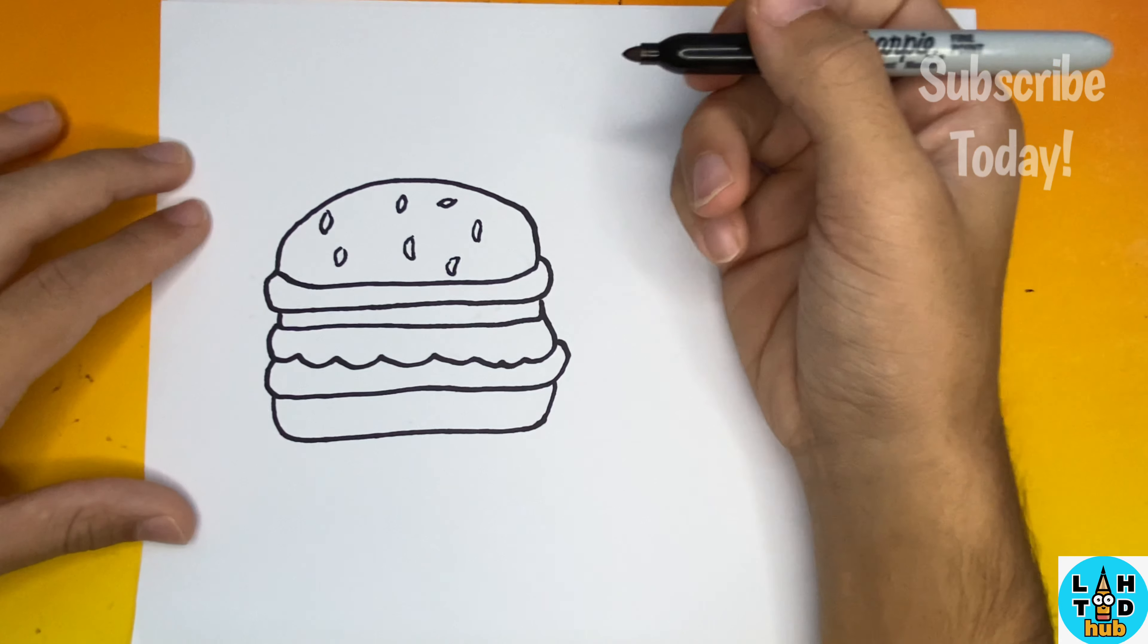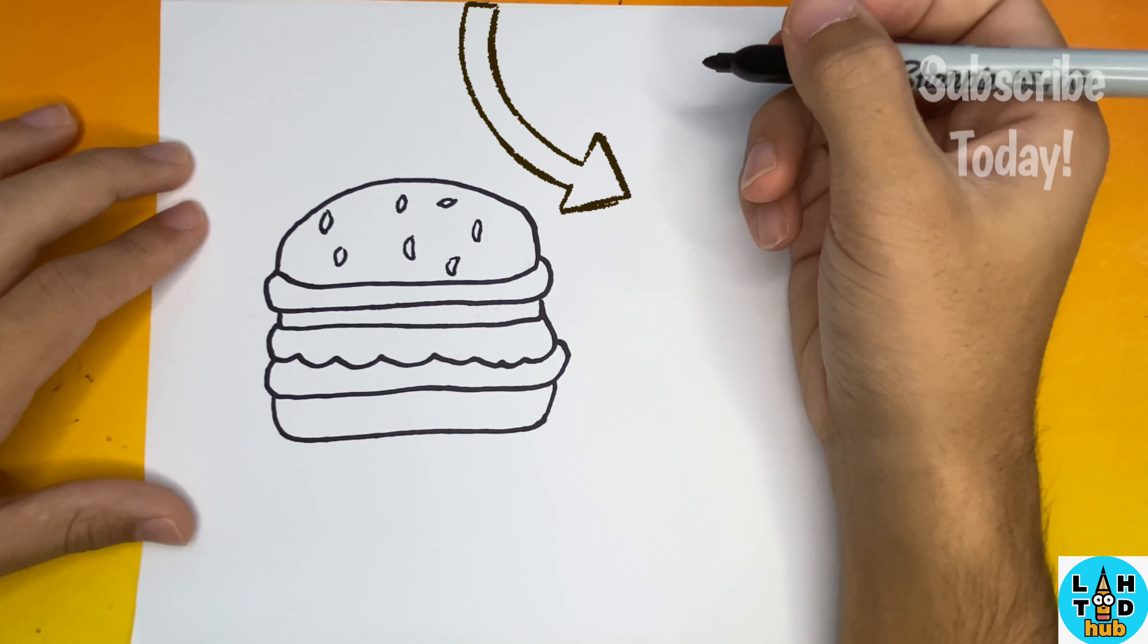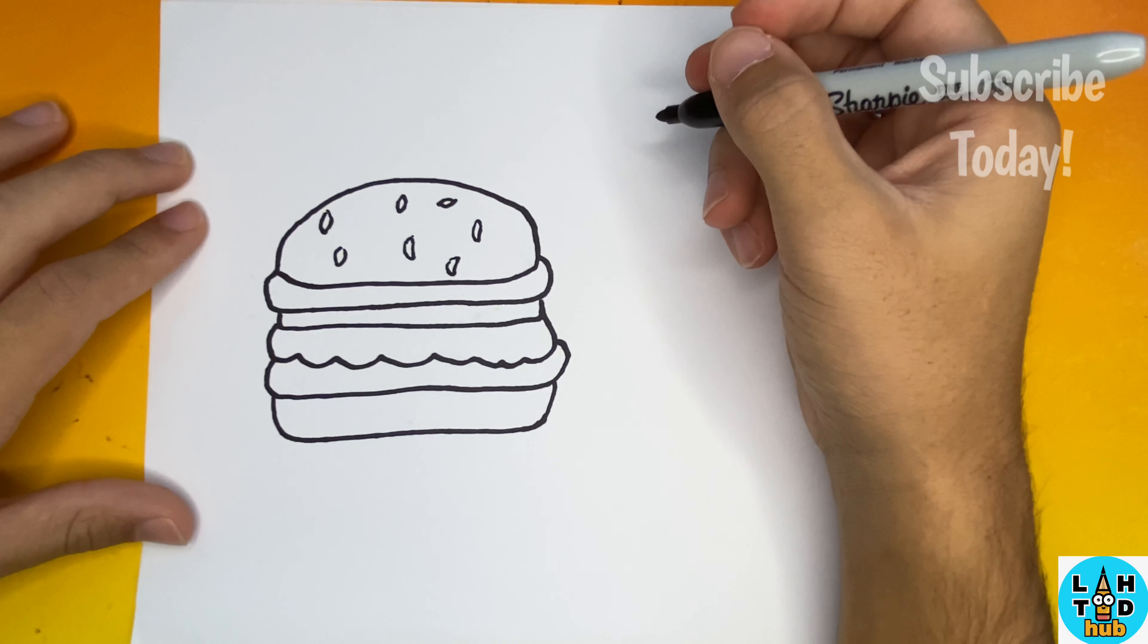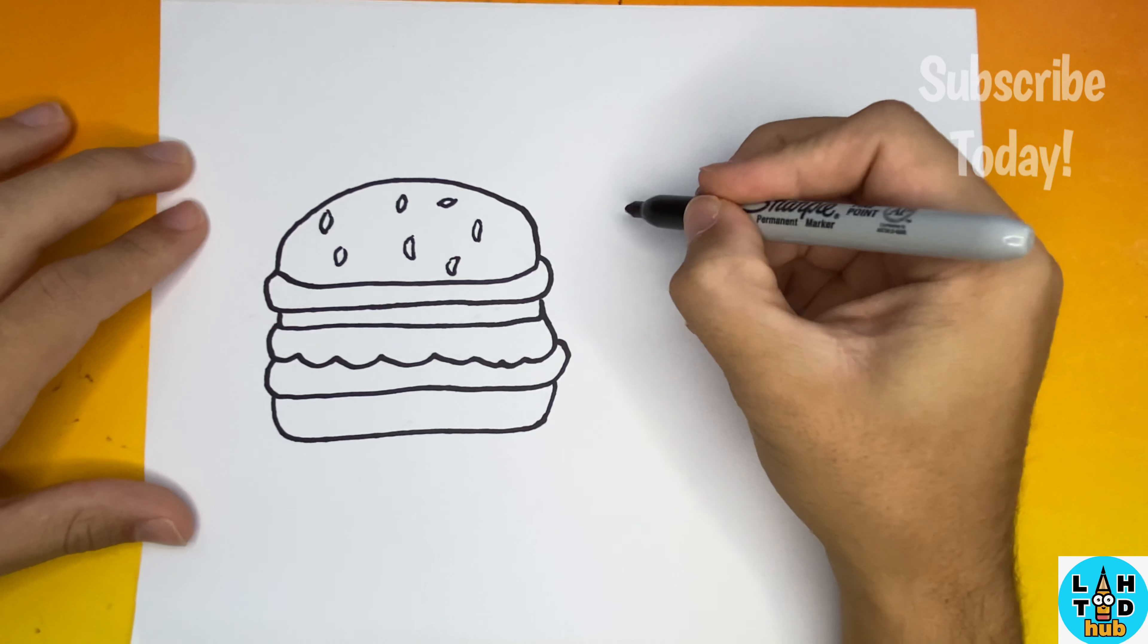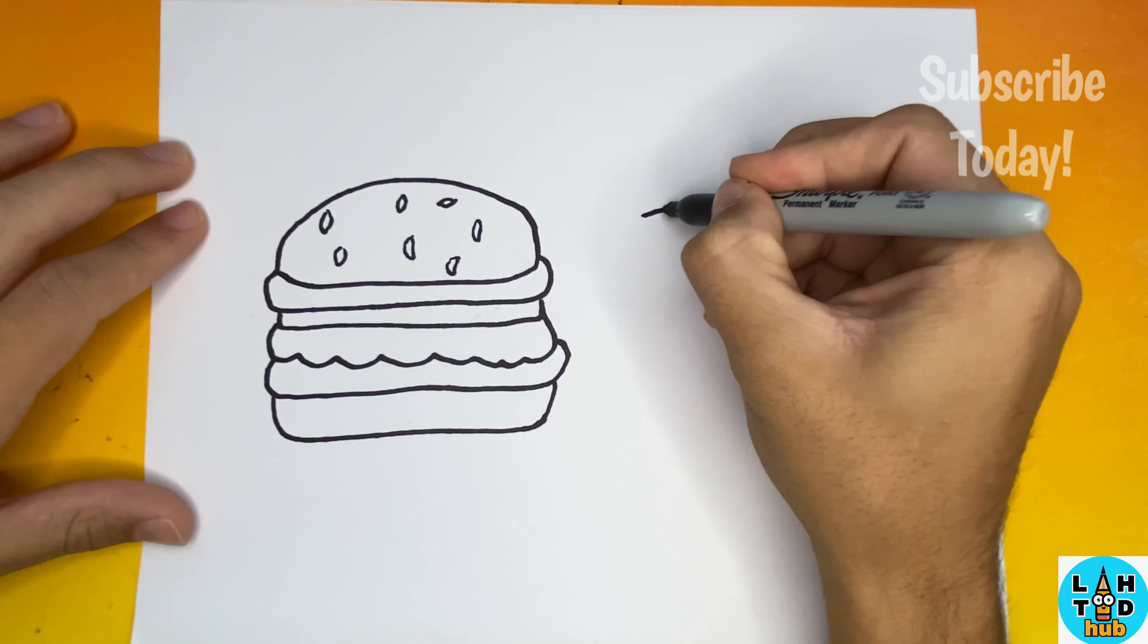Fantastic, that hamburger looks awesome. Now let's hop over to the right side and we're going to make a drink. So for the first step of making our drink, we're going to begin by making a big rectangular like shape, but our rectangle will be slightly curved.